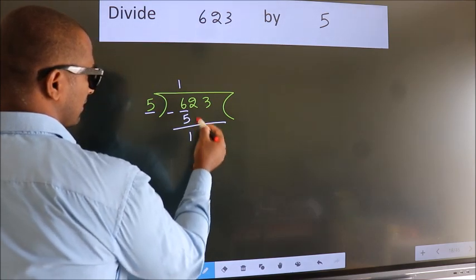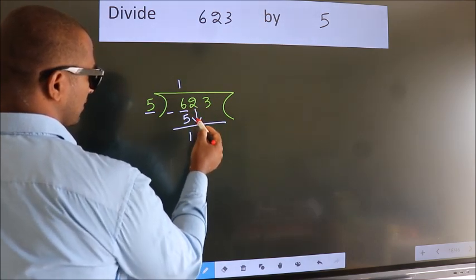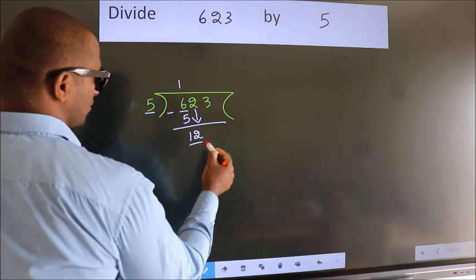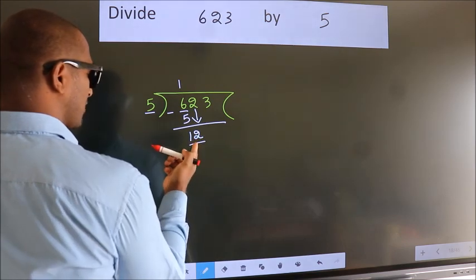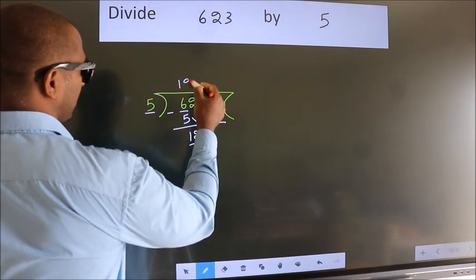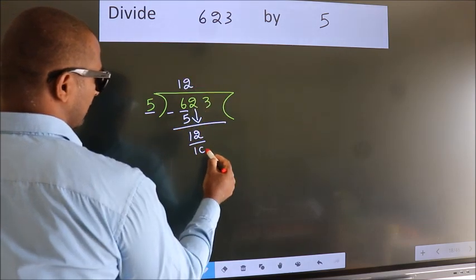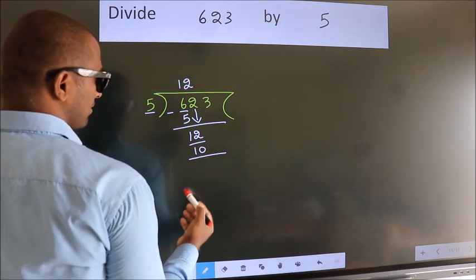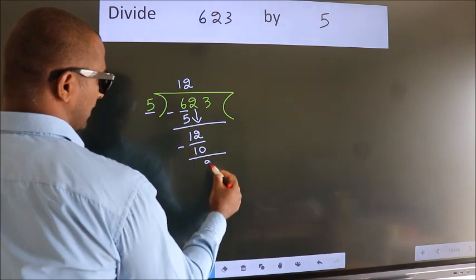After this, bring down the next number. So 2 down. So 12. A number close to 12 in 5 table is 5 twos 10. Now we subtract. We get 2.